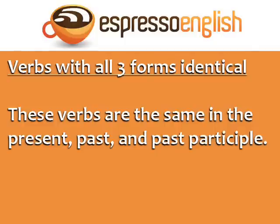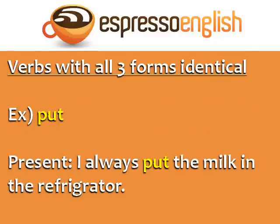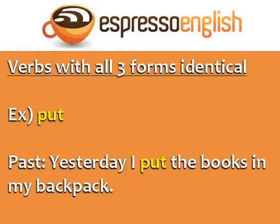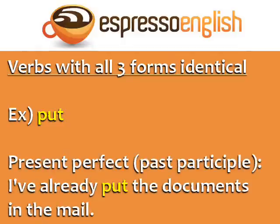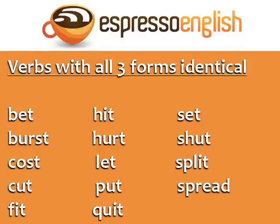The first group is irregular verbs with all three forms identical. These verbs are the same in the present, past, and past participle. One example is 'put.' Present: I always put the milk in the refrigerator. Past: Yesterday I put the books in my backpack. The present perfect uses the past participle form: I've already put the documents in the mail. Other verbs with all three forms identical include: cost, cut, hit, hurt, let, set, and shut.